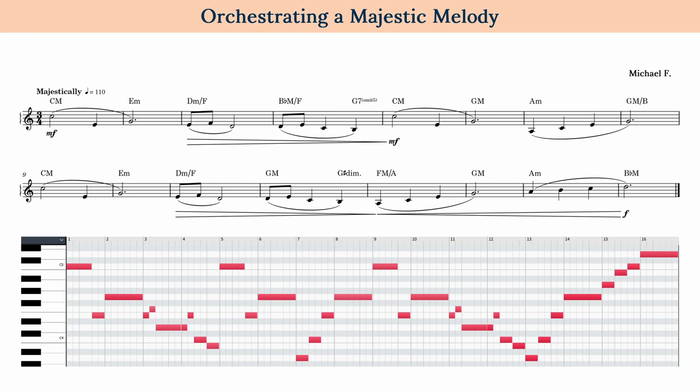I think a lot of times people separate the composition side of things from the orchestration process, which is of course perfectly fine to do, but as someone who's been doing this for quite a while, I found that it really helps to be thinking about the orchestration early on in the compositional process. That doesn't necessarily mean figuring out all of the orchestration details at the beginning, but even simple things like having instruments in mind when you're coming up with melodies can be useful.